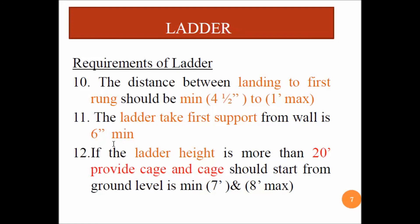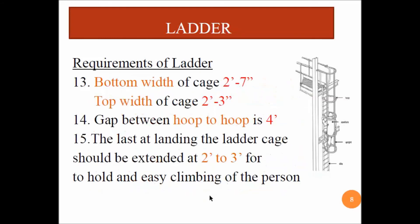The distance between the landing and the first rung should be a minimum of 4 inches to a maximum of 1 foot. The ladder's first step from the wall must be 6 inches minimum. If the ladder height is more than 20 feet, provide a cage, and the cage should start from ground level at a minimum of 7 feet and maximum of 8 feet.